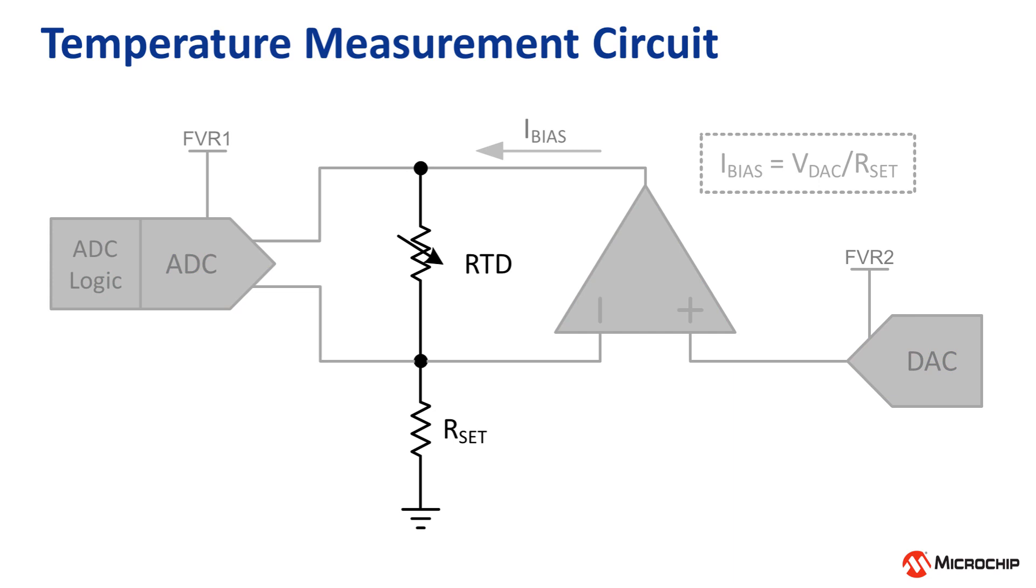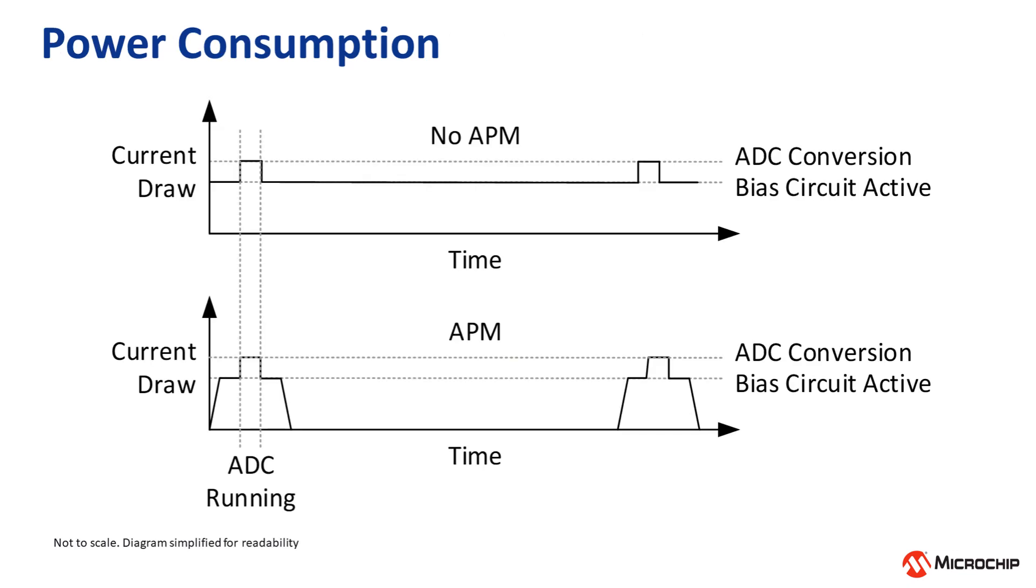This saves a significant amount of power over the long term. Without the APM, either the CPU would have to manually enable and disable each peripheral, or the peripherals would have to be left enabled, which wastes power.